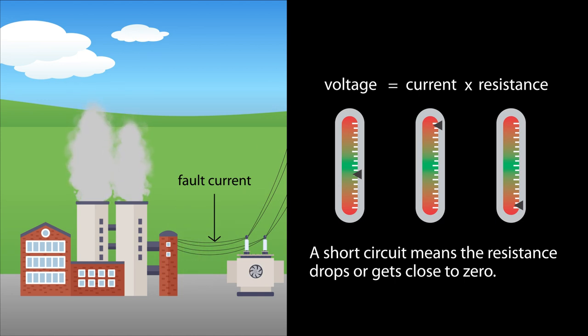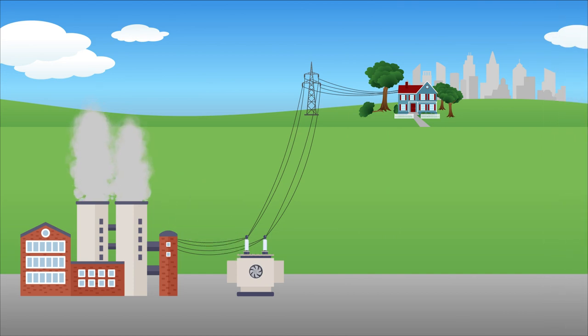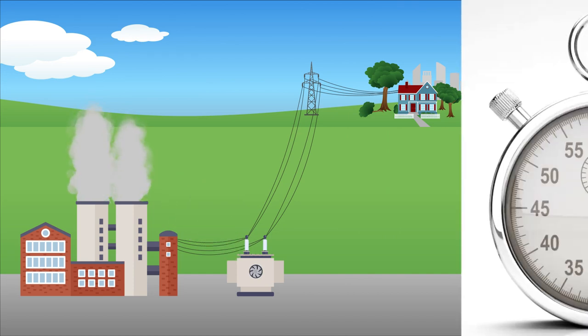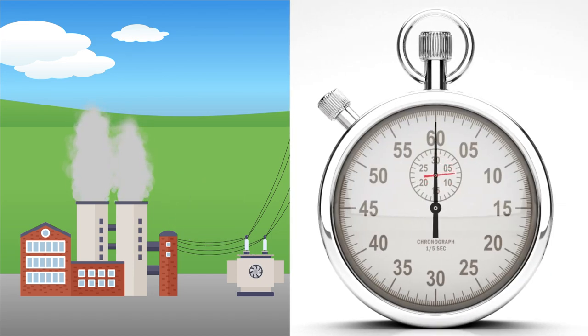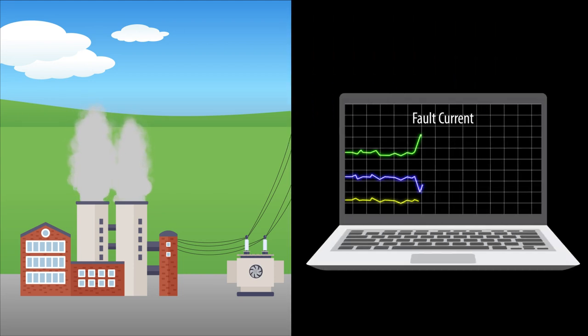But we can also use fault current to our advantage. It's relatively easy for circuit breakers in the grid, which are basically giant versions of the circuit breakers you see in your house, to detect these abnormally high levels of current and disconnect the part of the system with the fault. They can respond really fast, which prevents damage to the grid. We have come to rely on detection and response to fault current as an important way to protect against short circuits.